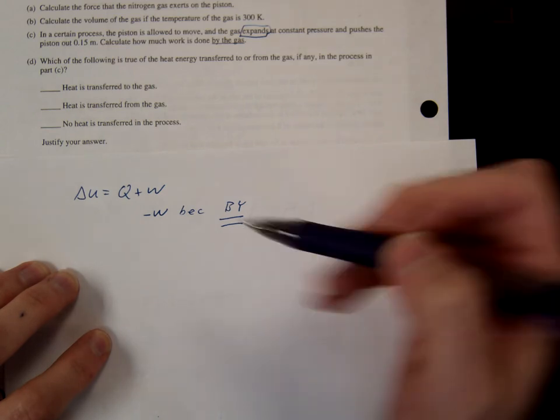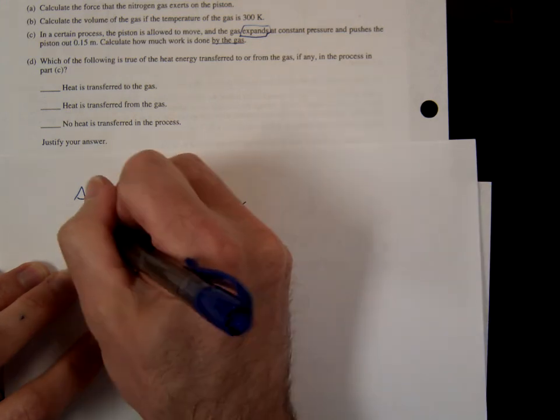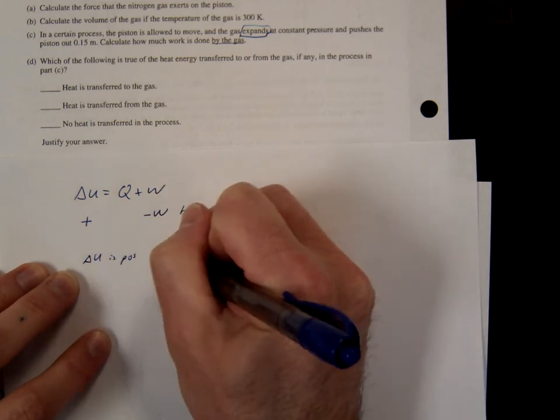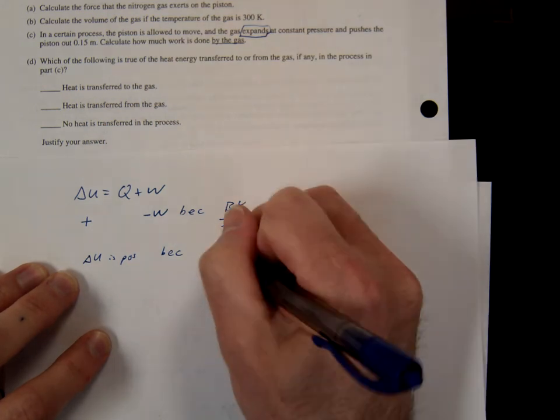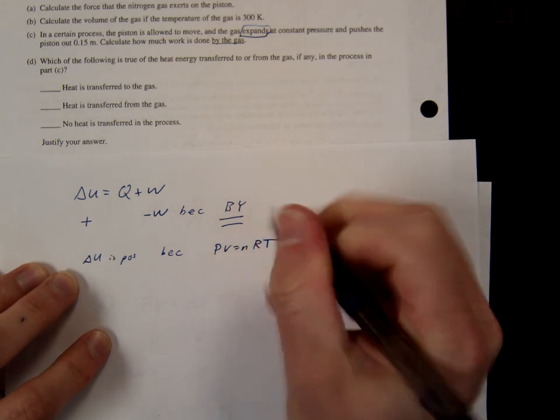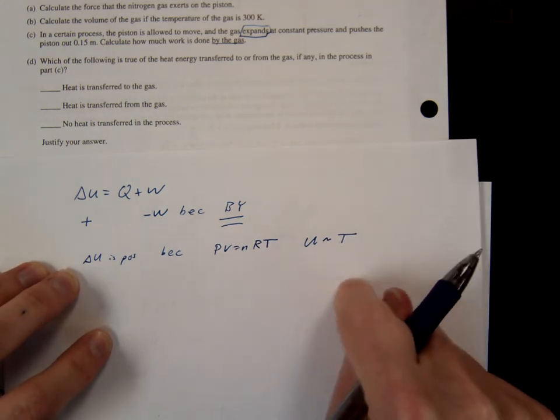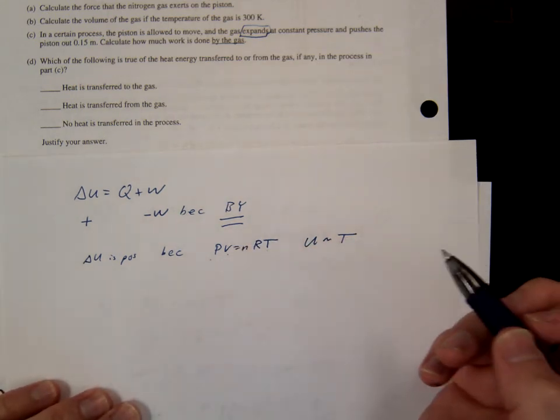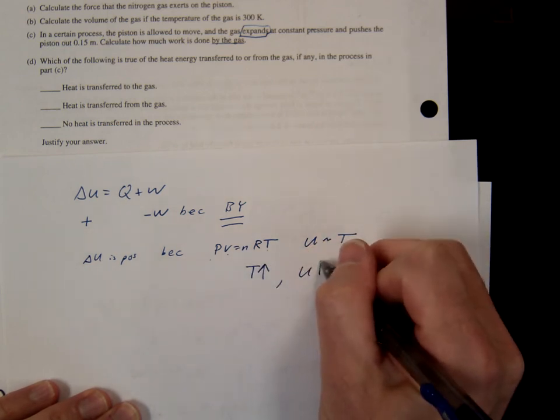Now delta U, is delta U going to be positive or negative? Positive. And how do we know delta U is positive? Okay. So PV equals NRT. Remember U is directly proportional to T. That's the key concept with U, directly proportional to T. So if my volume got larger and my pressure was constant, what happens to my temperature? Temperature goes up. So if my temperature goes up, what happens to U? U goes up.